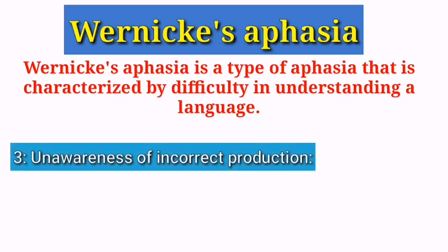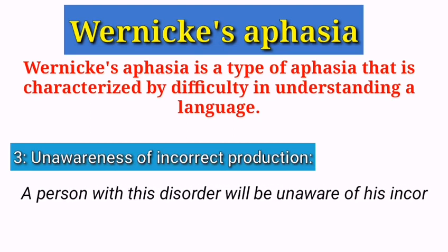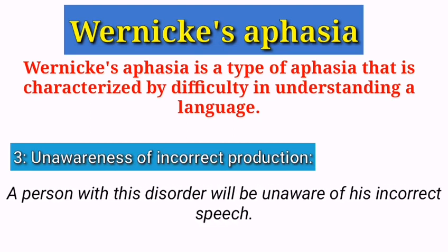Unawareness of incorrect production is also one of the main symptoms — a person having this language disorder will be unaware of their incorrect production of speech. It means a person will not notice their incorrect speech. They will think they are saying syntactically and semantically correct sentences, but they won't be. This is also one of the symptoms of this language disorder.